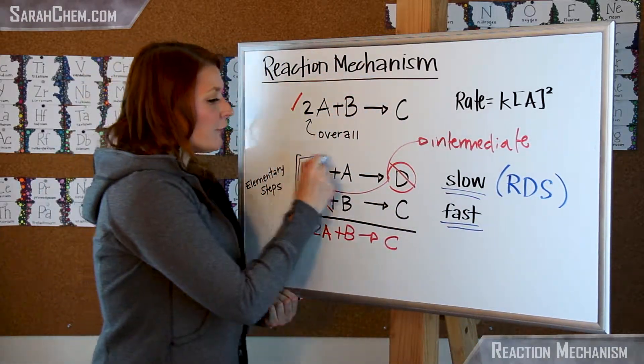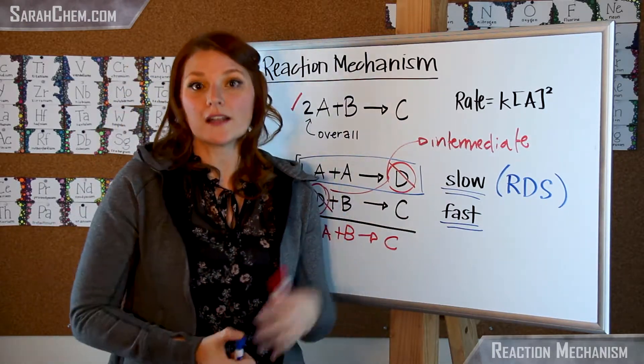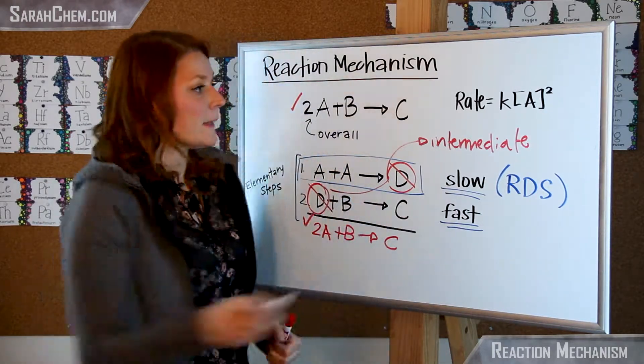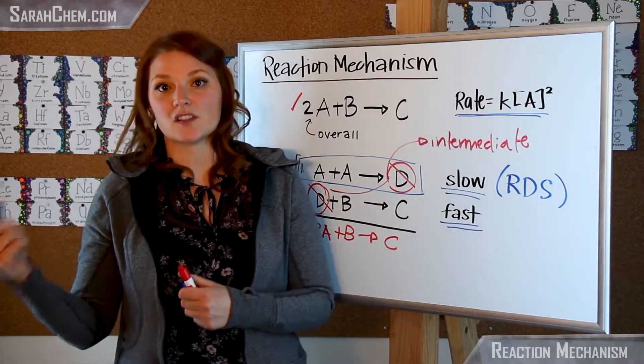So that means that I'm going to use the first elementary step in order to figure out what the rate is according to my reaction mechanism. Keep in mind that my one that I determined experimentally is the rate is equal to k times A squared.